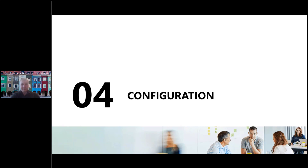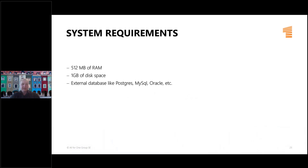Now for the more technical configuration side of Keycloak. These are the minimal requirements to run a Keycloak instance: half a gigabyte of RAM, one gigabyte of disk space, and an external database to store users, groups, and everything else. Of course, those are just minimal system requirements. For development, it should easily run on a t1.micro AWS EC2 instance or a B2s in Azure.